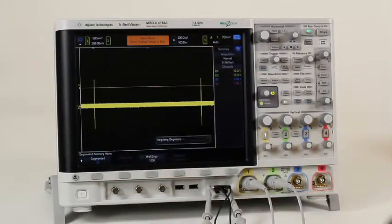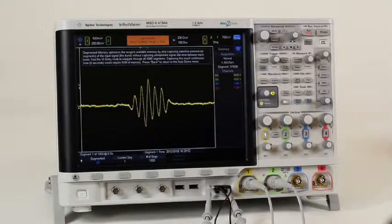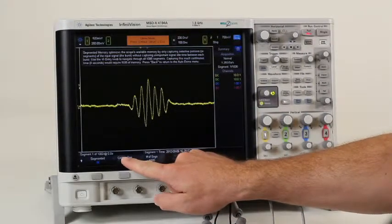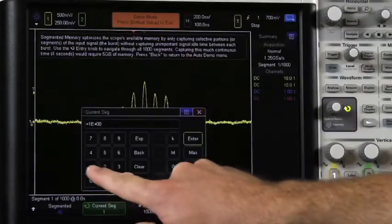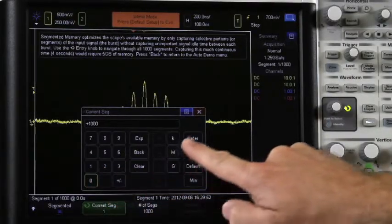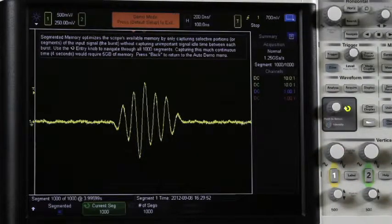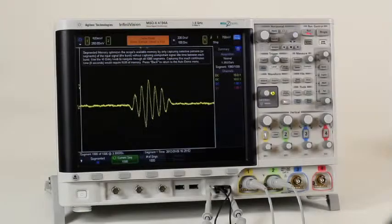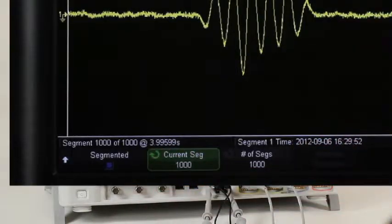The scope is now acquiring 1000 RF bursts with segmented memory. With the acquisition complete, I'm going to navigate to the 1000 segment. You can see that the graphical user interface has been designed for touch so that making selections or entering settings is extremely easy. We can see the time stamp on this 1000 segment is about 4 seconds after the first segment. This is an eternity in digital signal world.